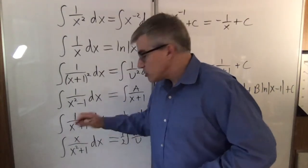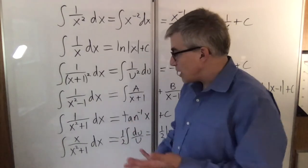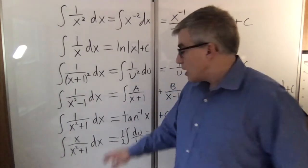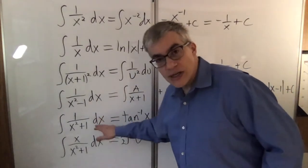What if instead of a minus sign it was a plus sign? Well now you can't factor the denominator. It's not a power rule. There's not an obvious substitution. This turns out to be inverse tangent. That's another one you just have to memorize.